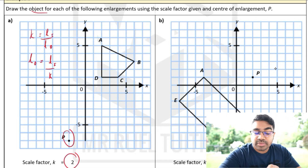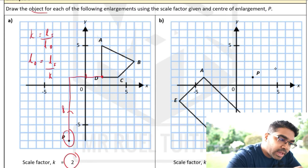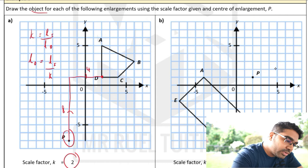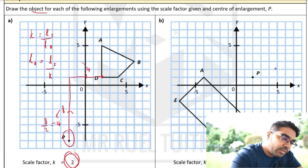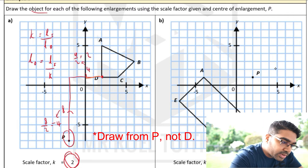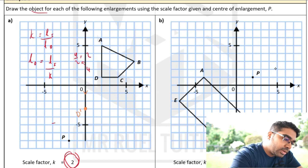The scale factor is 2 and this is the center of enlargement. Let's start with D as our anchor point. From the center to D we count 8 units and then 4 units. To find where the object vertex will be, we divide by the scale factor of 2: 8 divided by 2 is 4, and 4 divided by 2 is 2. So we go 2 units to the right and 4 units down — this is where the corresponding object vertex is.